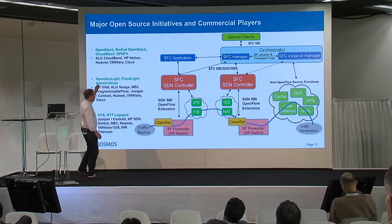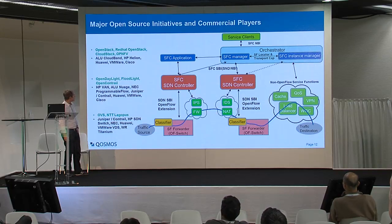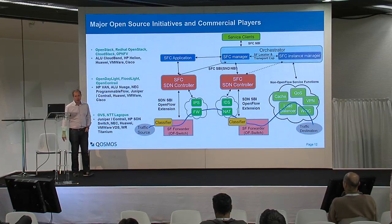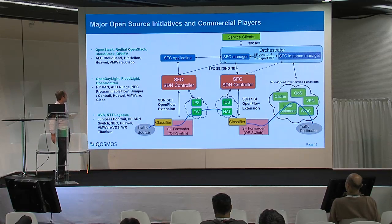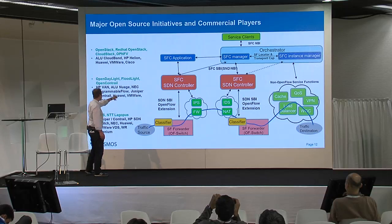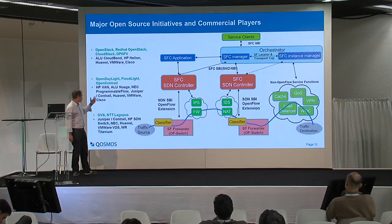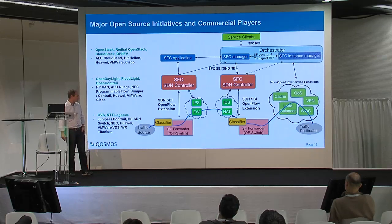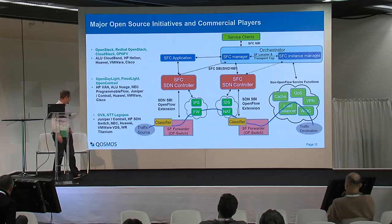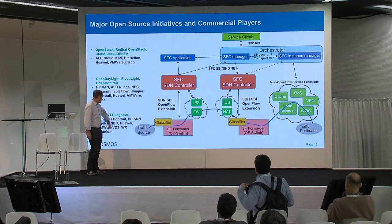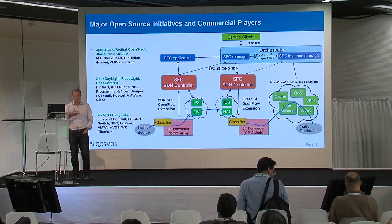There are also projects and products involved — open source products shown in green and commercial products in black. You find companies like Alcatel-Lucent, HP, and Huawei working in these domains. For the controller layer, Open Daylight is very active, Contrail is working on service chaining, and HP has a commercial product called VAN. Huawei and Cisco are among those working on the infrastructure layer.